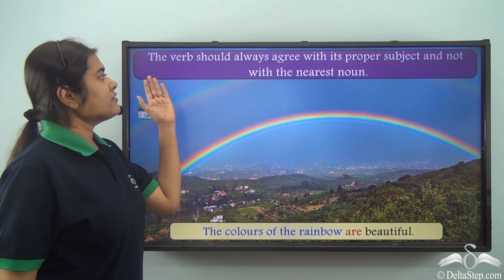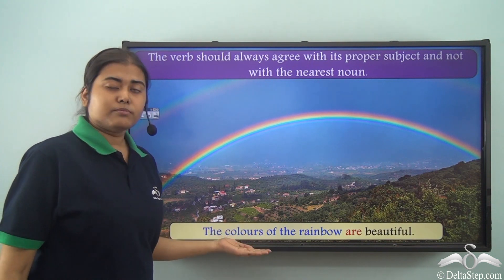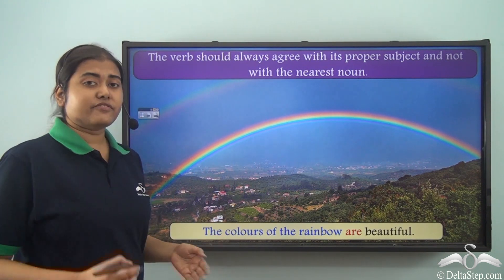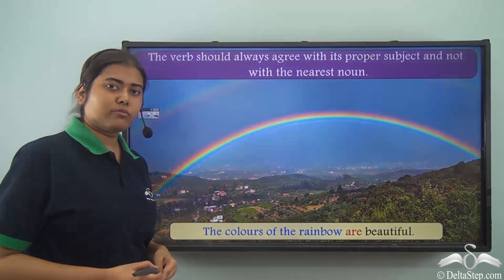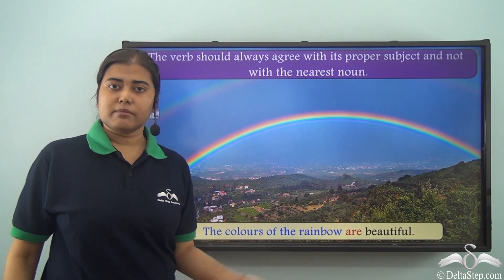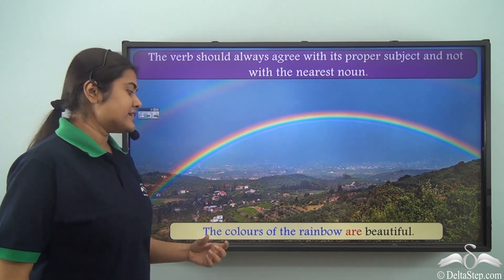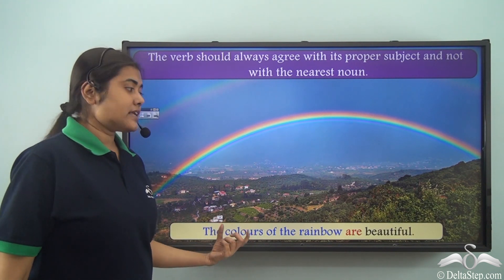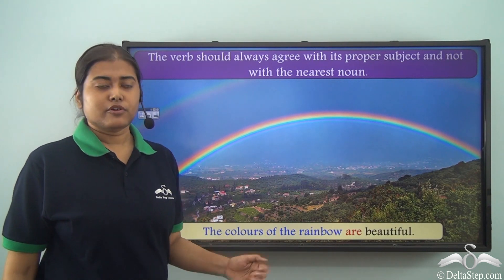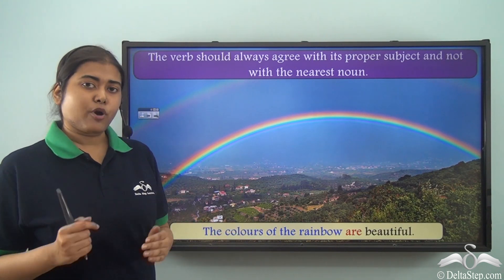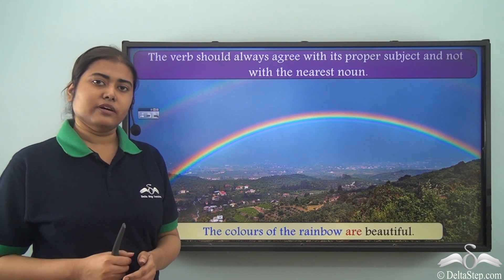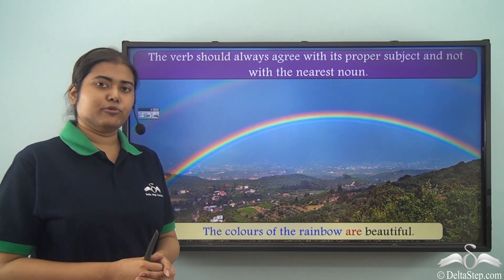We notice that the verb should agree with the proper subject and not with the nearest noun. This is a very common mistake that we tend to make. Especially in cases where you have a long subject, you need to be very careful to identify which noun is the proper subject. We should not go by the nearest noun to the verb — we need to identify the proper subject and then accordingly decide whether to use a singular or a plural verb.